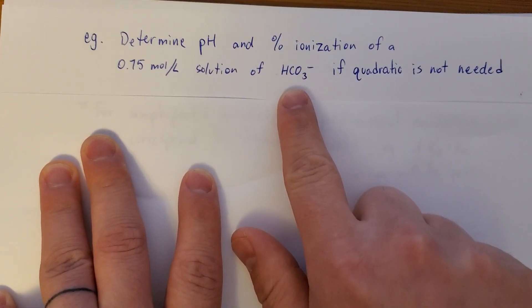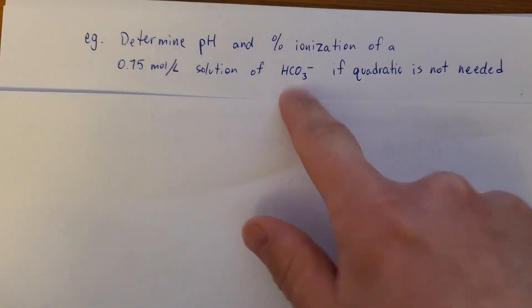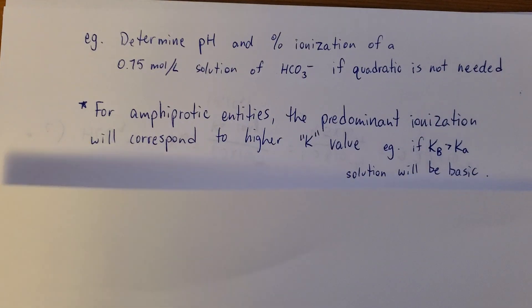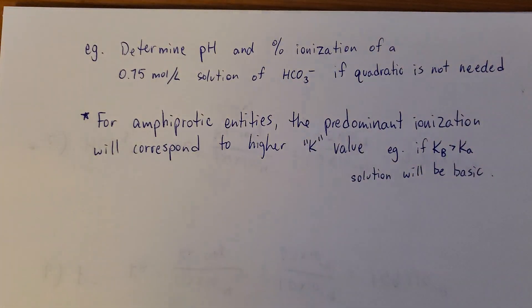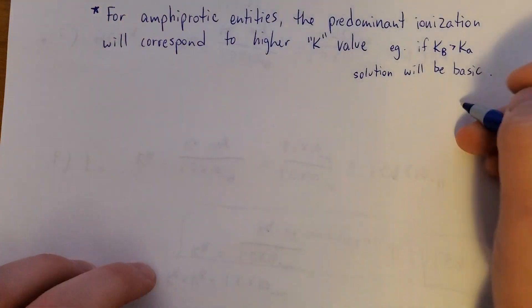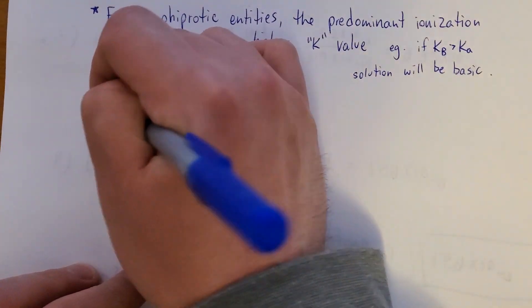Okay, so we actually just finished discussing this entity. It's amphiprotic. It can be acidic or basic. Whichever one has the higher K value determines which ionization dominates. So if KB is greater than Ka, solution will be basic. If Ka is greater than KB, solution will be acidic. So let's first determine whether or not this will be acidic or basic.